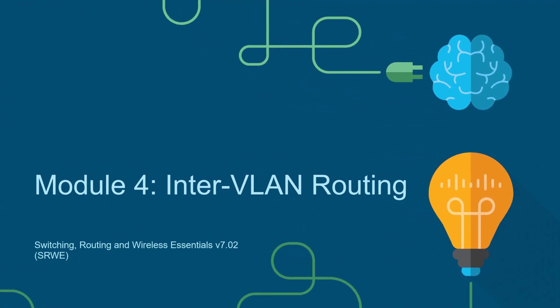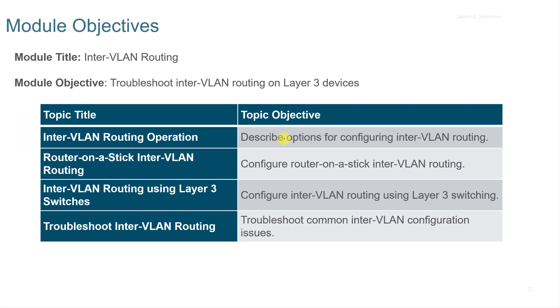This video accompanies the Cisco Netacad Switching Routing and Wireless Essentials course. This is Module 4, Inter-VLAN Routing. In this video we're going to look at four objectives: Inter-VLAN Routing Operation, Router on a Stick, Inter-VLAN Routing using a Layer 3 Switch, and Troubleshooting Inter-VLAN Routing.